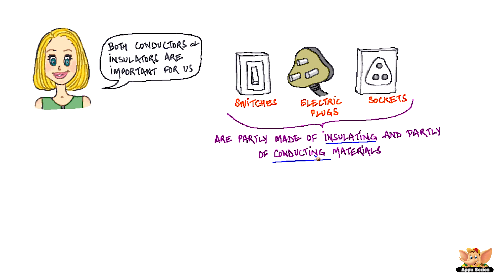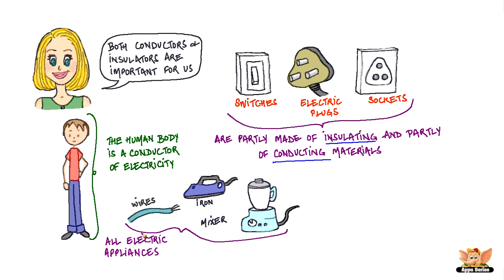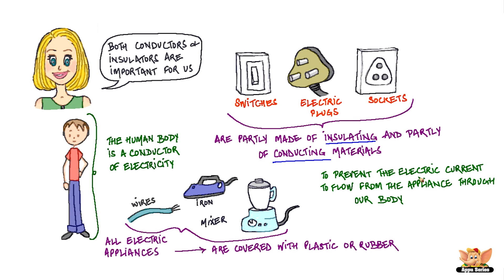The plugs and switches that people touch when we want to switch on an electrical appliance are made of insulators. The human body is a conductor of electricity. That is why all electric appliances used by us are covered with plastic or rubber to prevent the electric current to flow from the appliance through our body.